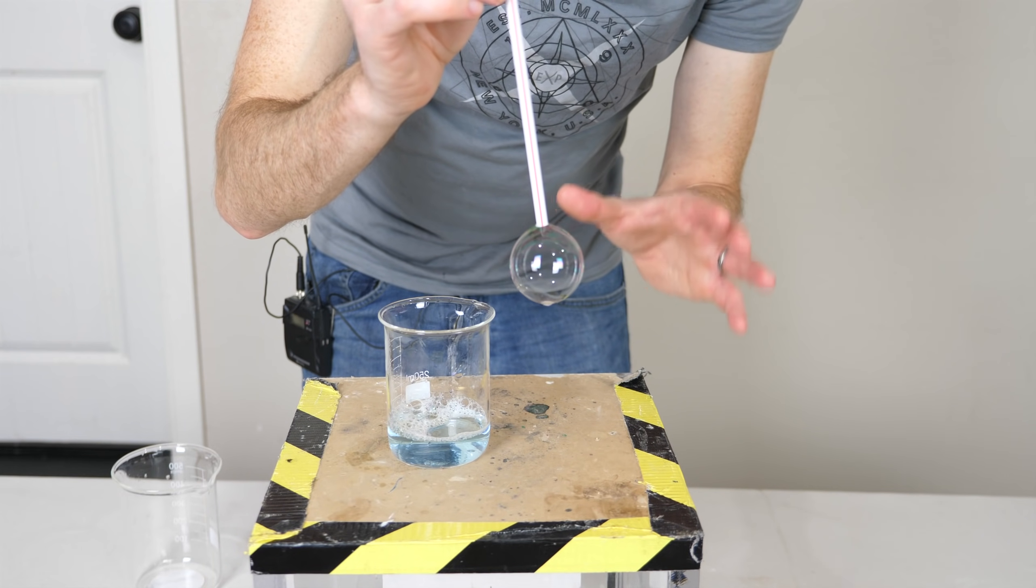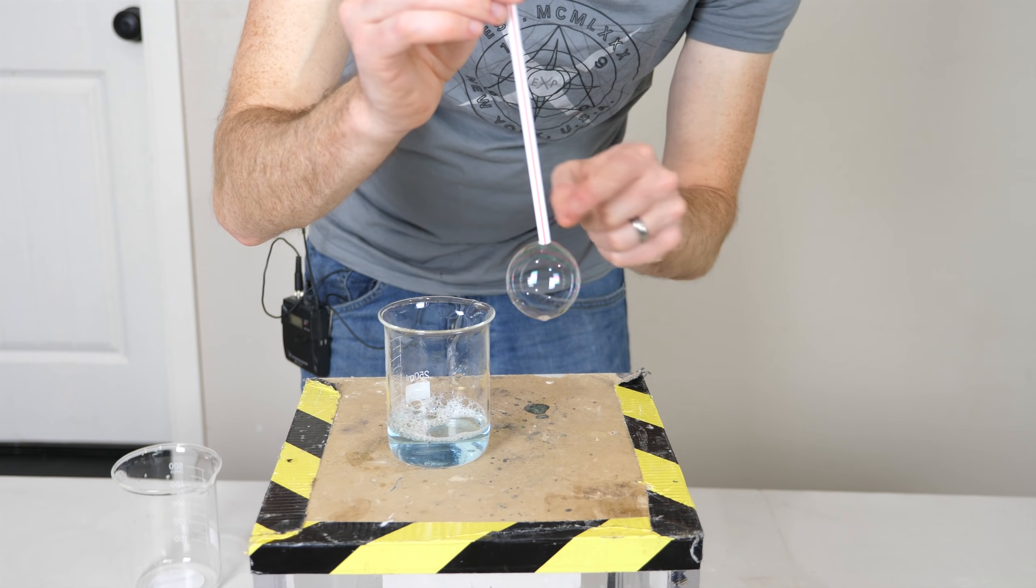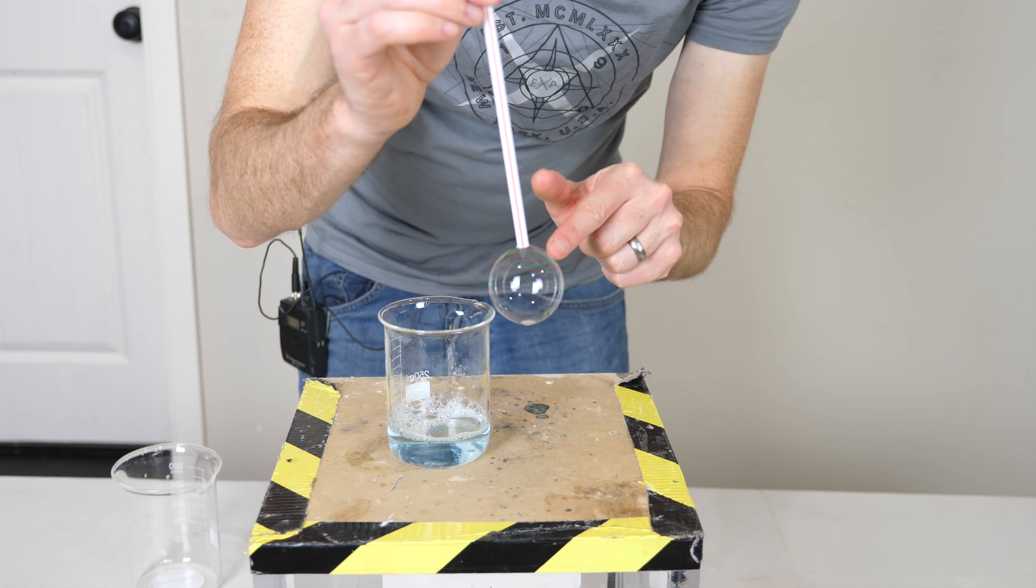So this is a normal bubble, and what it consists of is air on the outside, a thin membrane of soapy water, and then air on the inside.